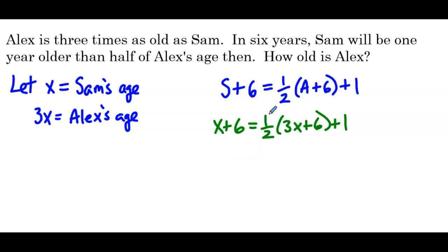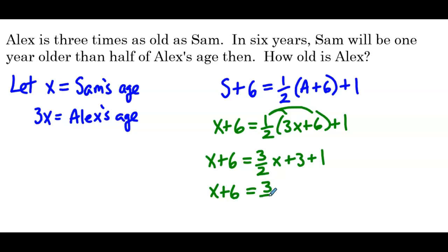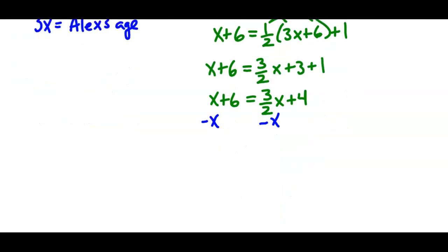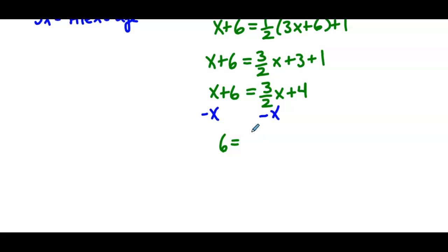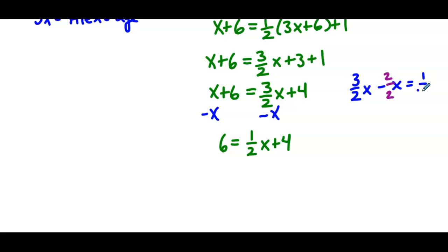We distribute the one half: x plus 6 equals three-halves x plus 3 plus 1. Combining like terms on the right-hand side: x plus 6 equals three-halves x plus 4. Subtracting x from both sides — using a common denominator, three-halves x minus two-halves x gives one-half x — so we have 6 equals one-half x plus 4.